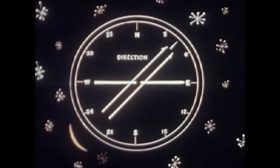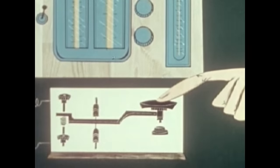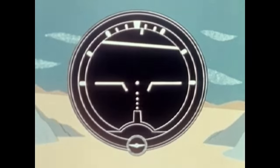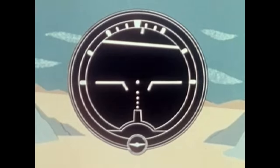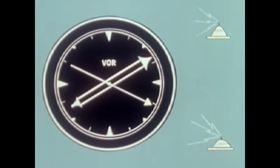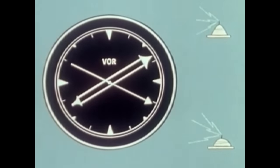Pilots in the early days had to depend solely on their own eyesight to reach their destinations. But as instruments were developed, their range of vision was steadily increased: the gyro compass, two-way radio, an artificial gyro horizon, voice radio communication, automatic direction finding equipment, high-frequency navigational systems.